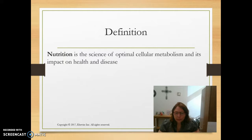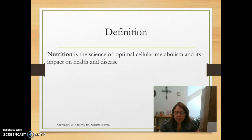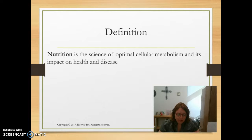Macronutrients are what give us our energy. These are our sources of energy, such as protein, fats, and carbohydrates. Micronutrients are vitamins and minerals. These particular elements are needed in minute amounts in order to keep our bodies in check and keep us moving in the direction of health.